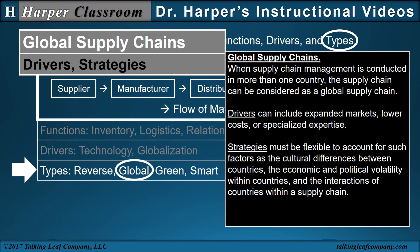Global supply chains. When supply chain management is conducted in more than one country, the supply chain can be considered a global supply chain. Drivers can include expanded markets, lower costs, or specialized expertise. Strategies must be flexible to account for such factors as the cultural differences between countries, the economic and political volatility within countries, and the interactions of countries within a supply chain.